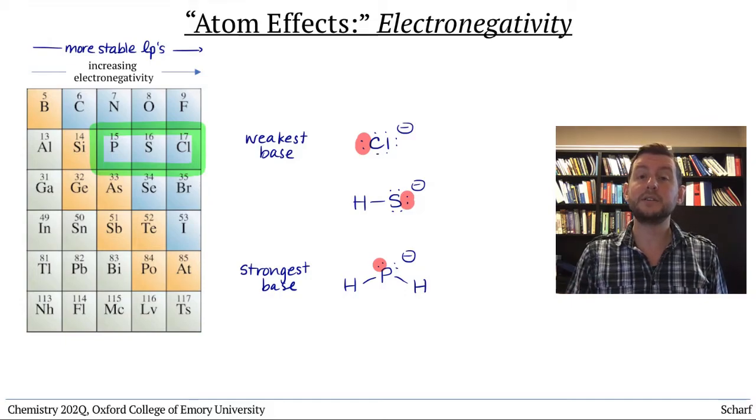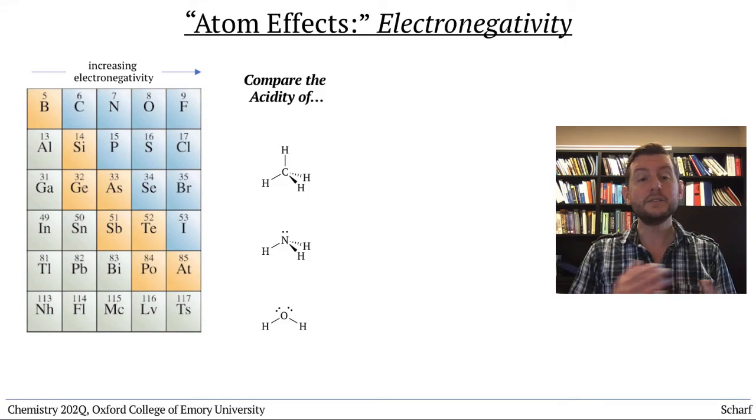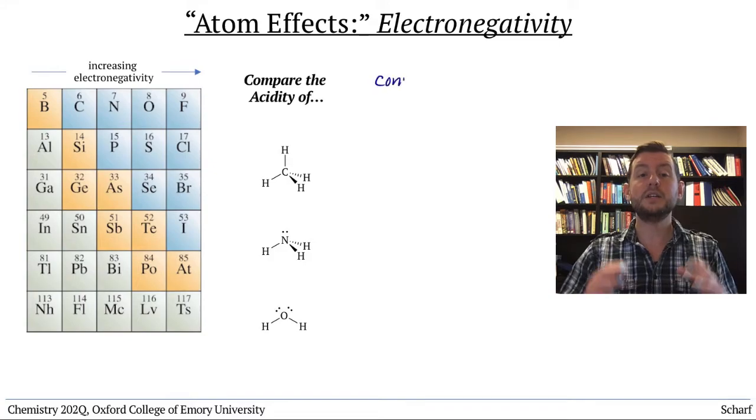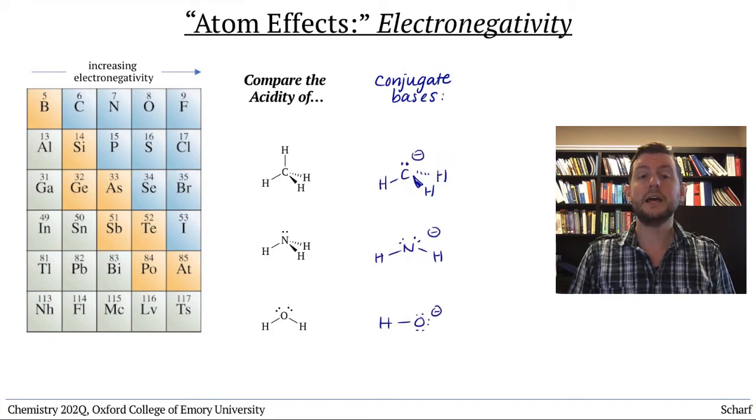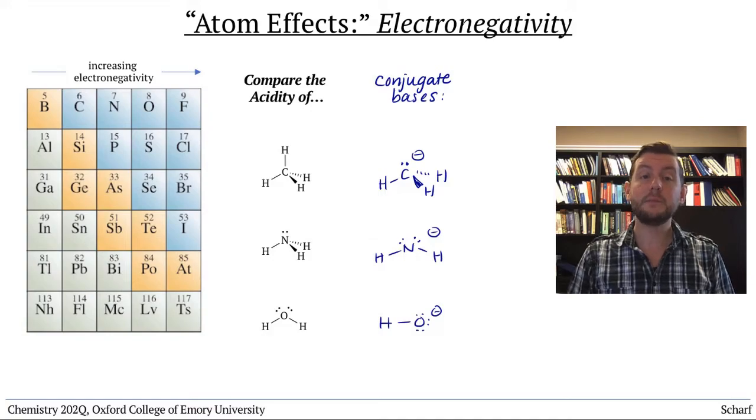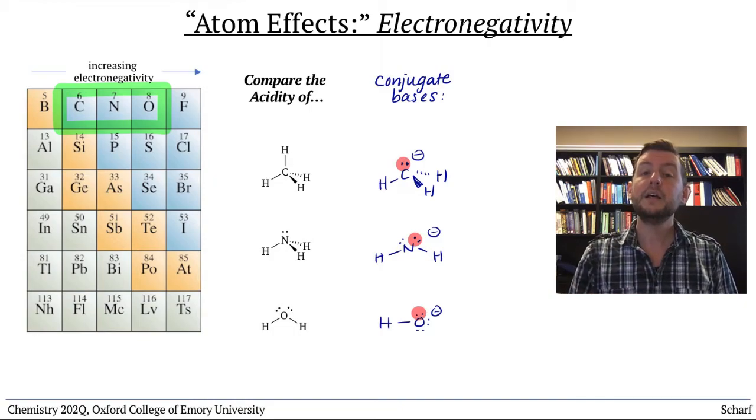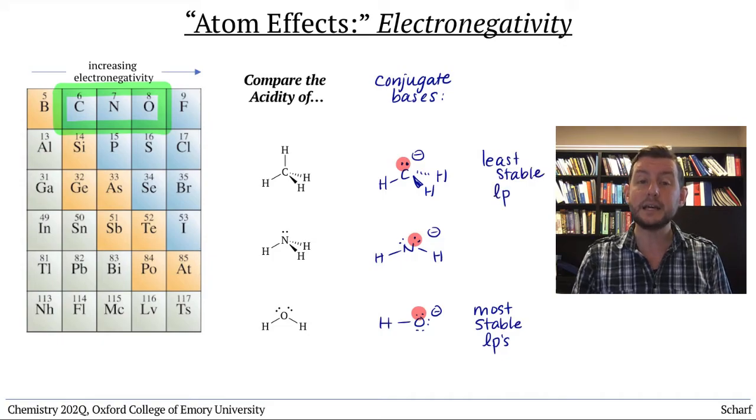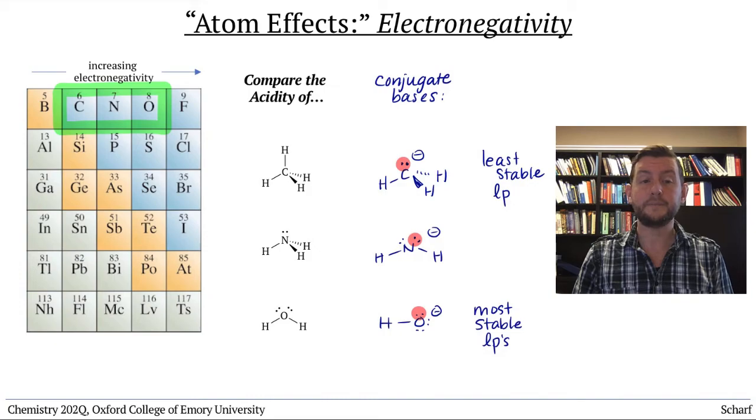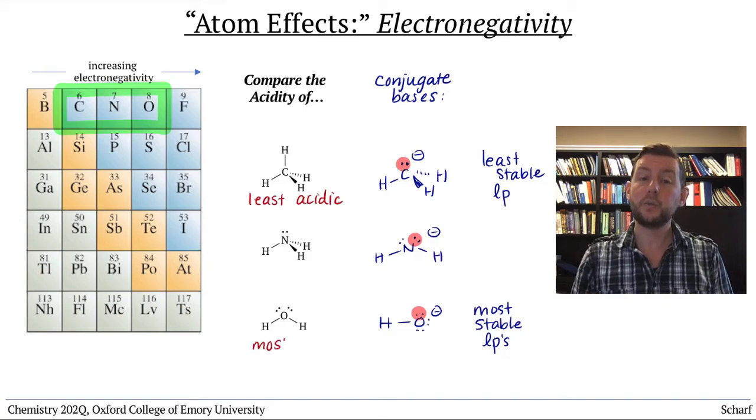We can apply electronegativity trends to understanding acidity as well. Let's compare the acidity of methane, ammonia, and water. As always, the first step in comparing acidity is to draw the conjugate bases. Here, those are CH3-, NH2-, and OH-. Then we compare the stability of the lone pairs on those bases. Since oxygen is more electronegative than nitrogen, and nitrogen is more electronegative than carbon, the lone pairs on hydroxide are the most stable of the three, and the lone pair on CH3- is the least stable, and therefore most basic, of the three. So CH4 is the least acidic of these three, and water is the most acidic.